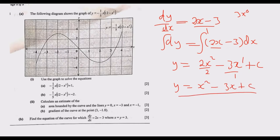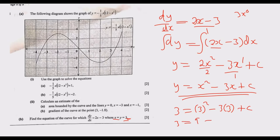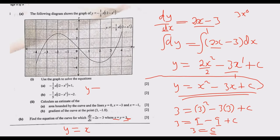This is an indefinite integral, but we have been given the values x = 3 and y = 3, so we can find c. Substituting: 3 = (3)² - 3(3) + c → 3 = 9 - 9 + c → 3 = c. Therefore c = 3, and the equation of the curve is y = x² - 3x + 3. This completes question 8, scoring the maximum 12 marks.